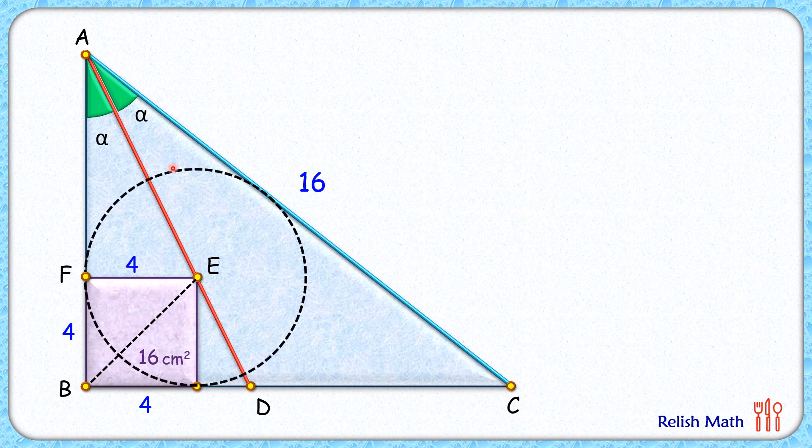So if we draw a circle with radius 4 centimeters, it will touch all three sides. Let's name this point as point G. Now, if we assume AF length as x centimeters, then from point A two tangents AF and AG are drawn, so AG will also be x.